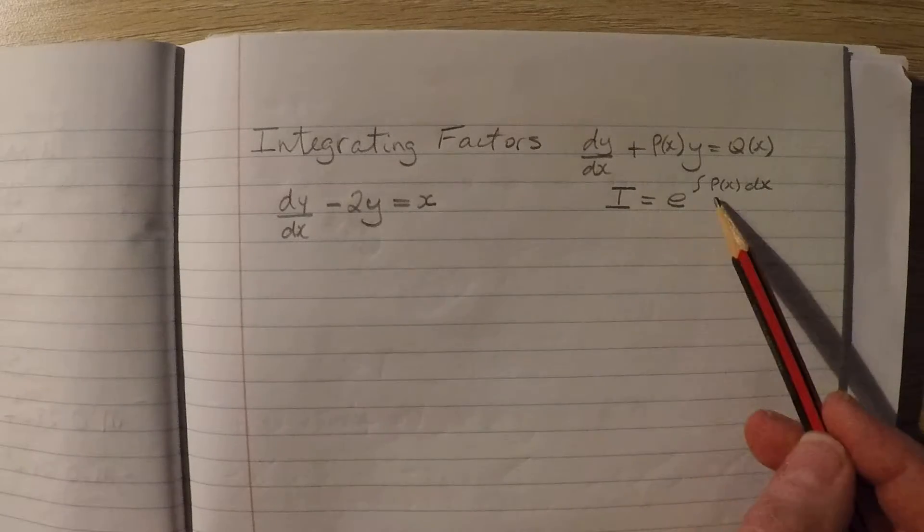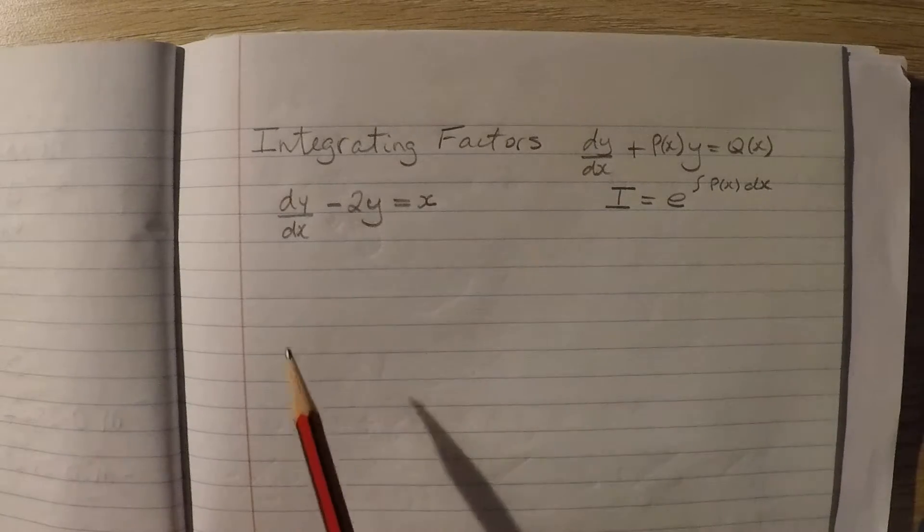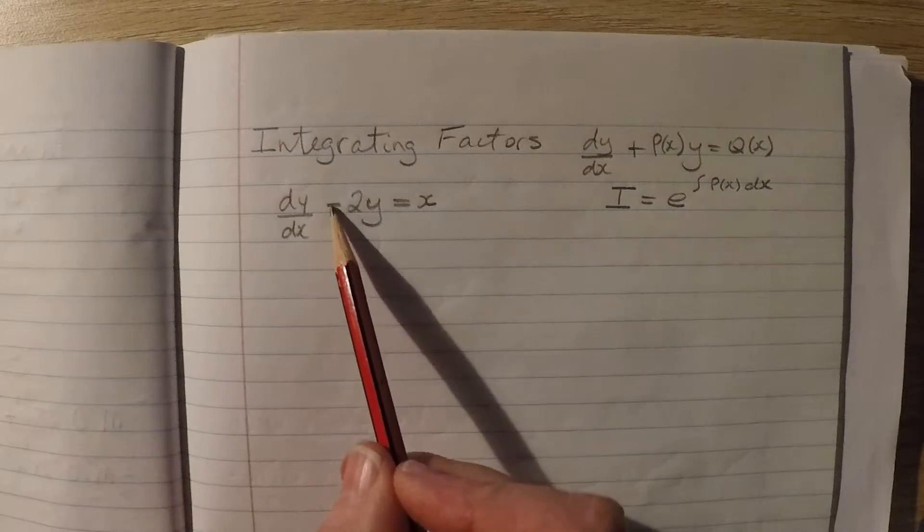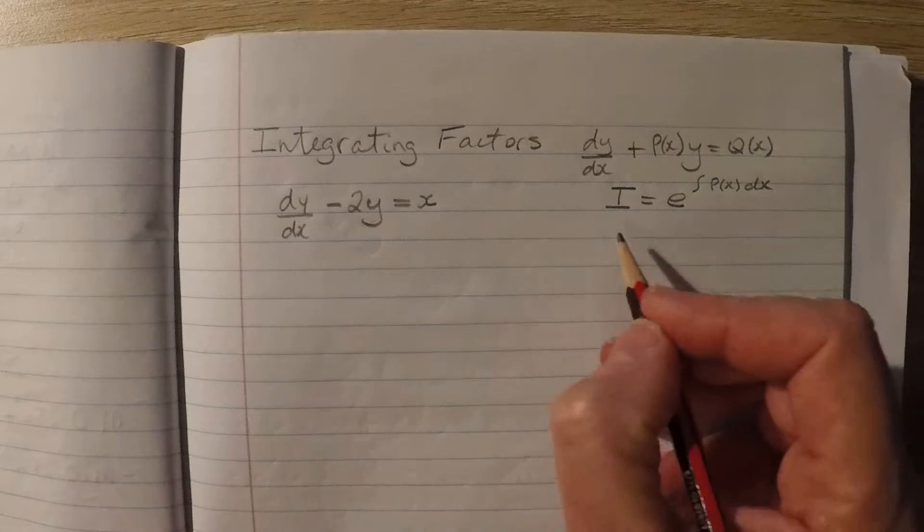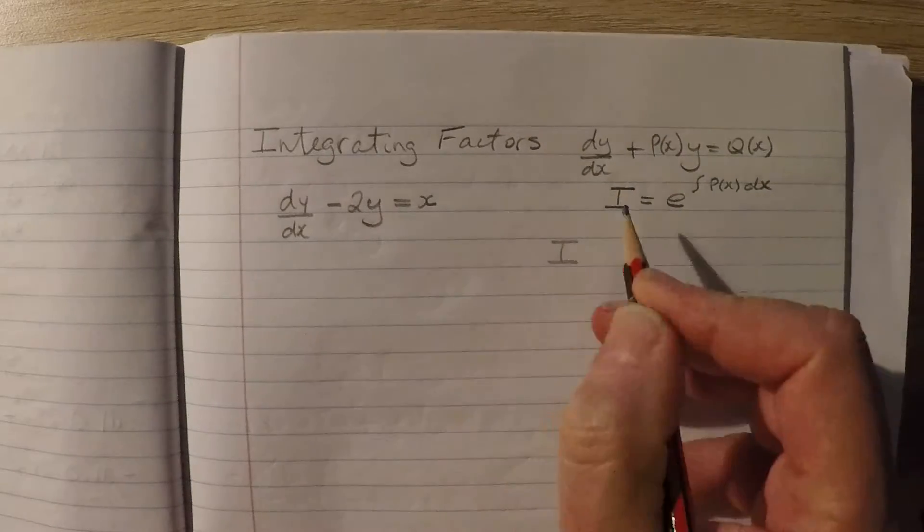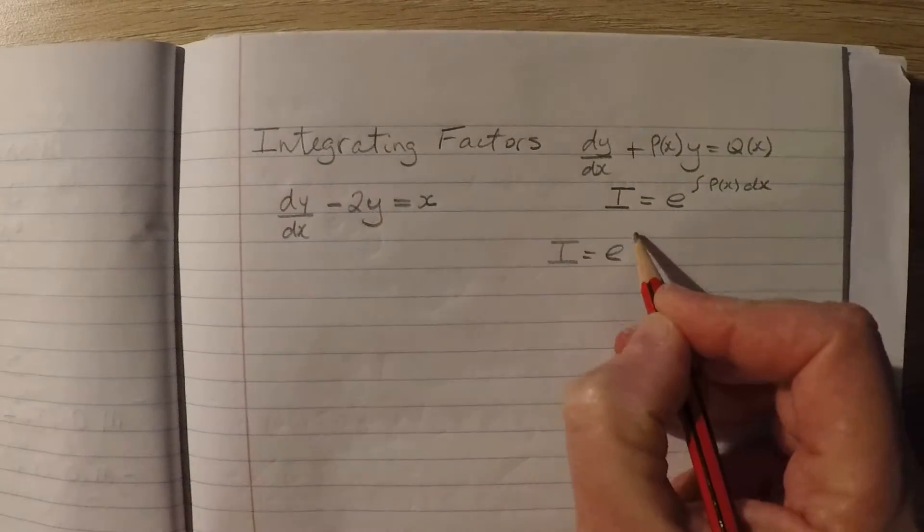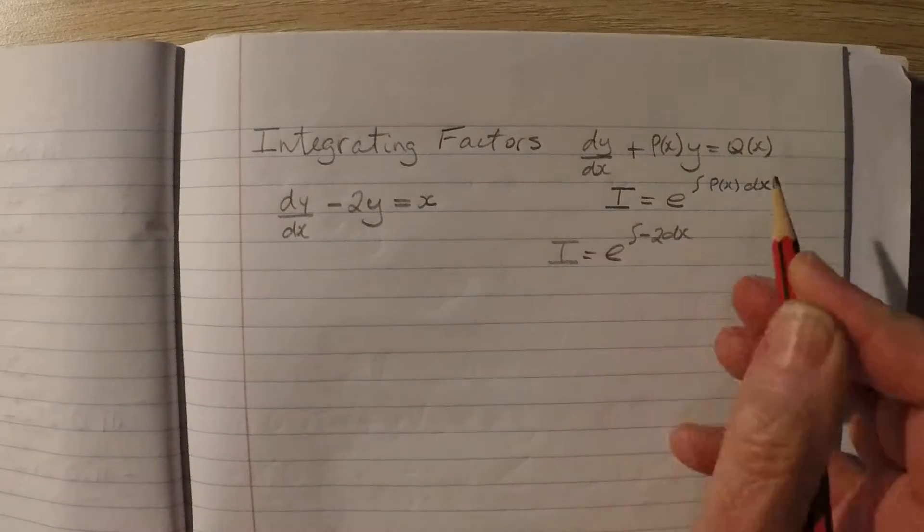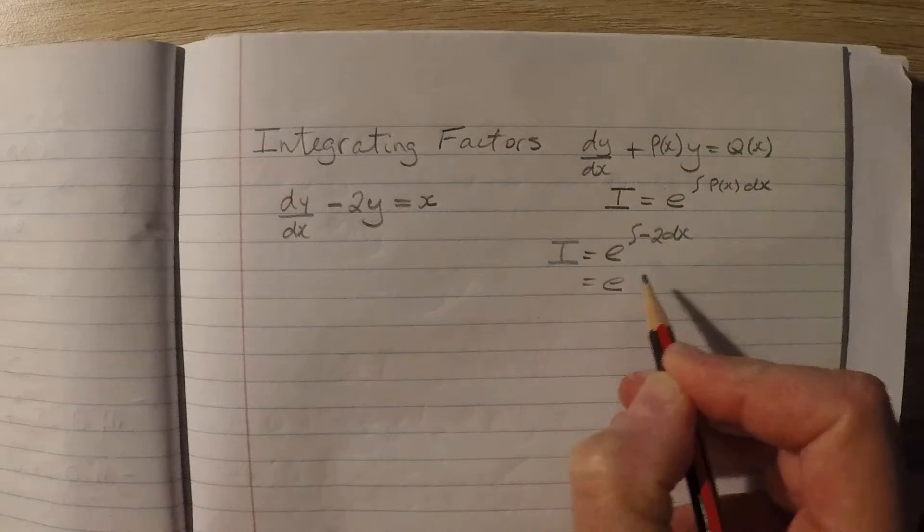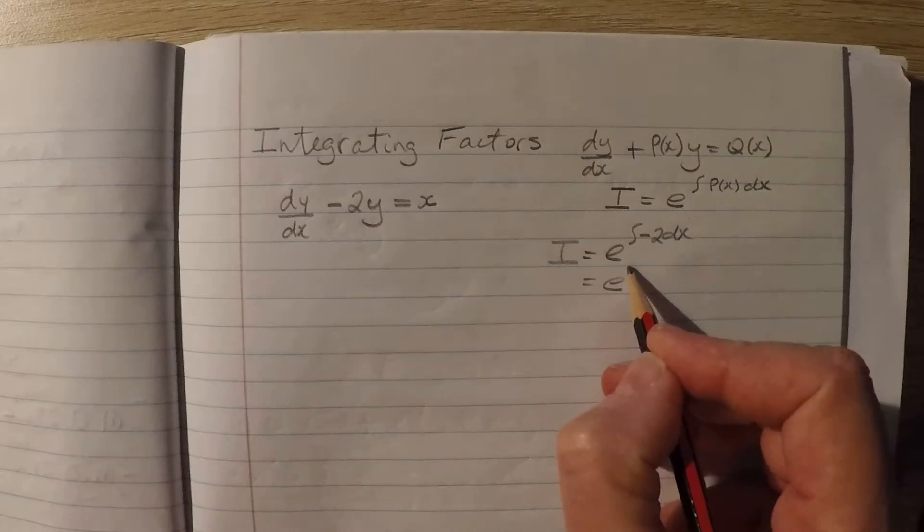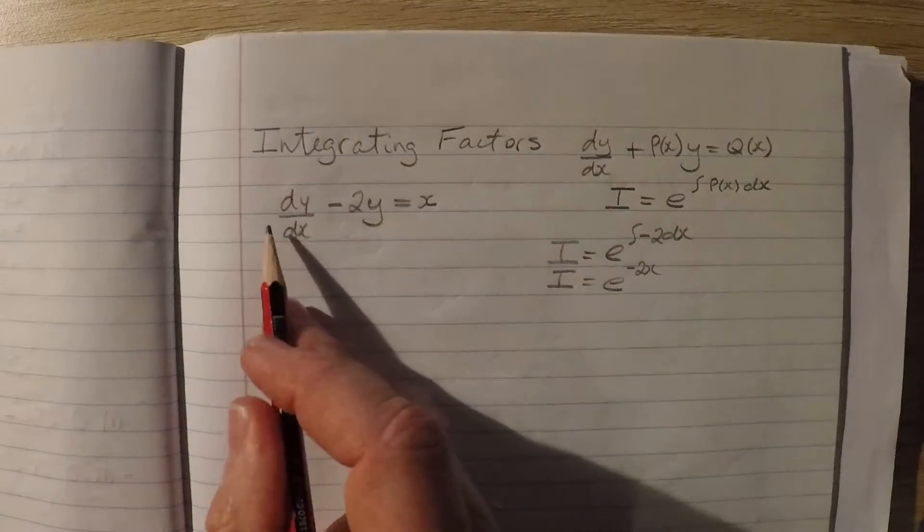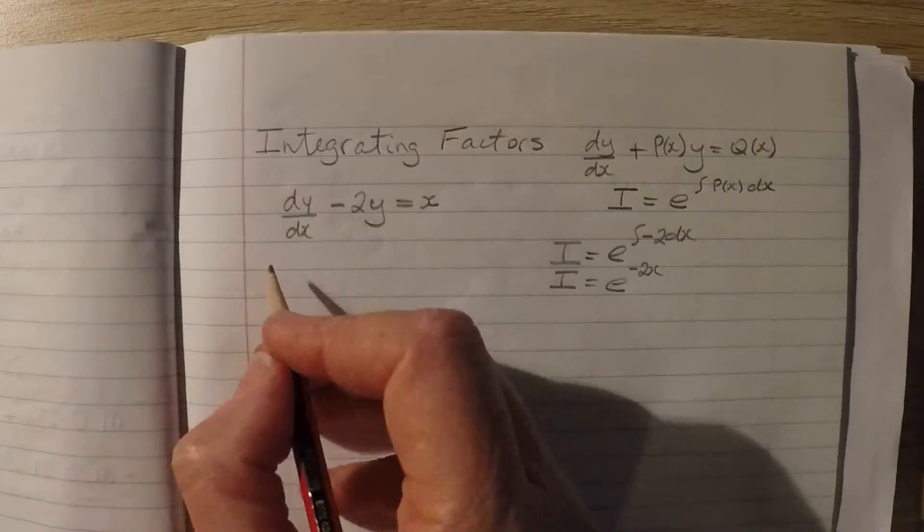We multiply through by the integrating factor. So in this case here, the negative 2 is p. Our integrating factor in this case would be e to the integral of negative 2 dx. Integral of negative 2 is negative 2x. This is our integrating factor. We'll multiply all terms by the integrating factor.